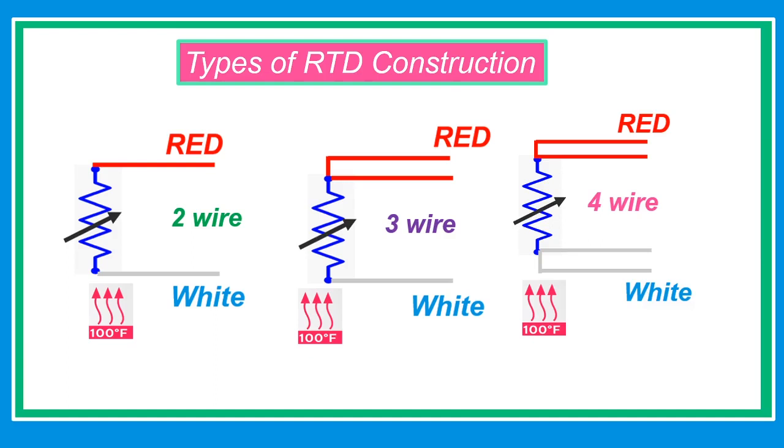In the four-wire configuration, two lead wires are connected to either end of the RTD. In this configuration, the RTD resistance may be measured with a four-wire resistive measurement with superior accuracy. Four-wire RTDs yield the most accurate measurement but are the most expensive RTD configuration.